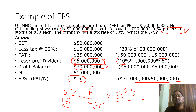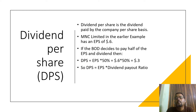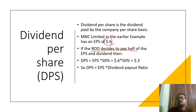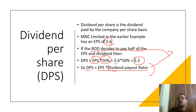Dividend per share is how much dividend the company is paying on a per-share basis. In the previous example the EPS of the firm is $0.6. The board of directors may decide to pay 50 percent of the EPS as dividend, which is $0.3. So DPS equals EPS multiplied by dividend payout ratio. In this case the payout ratio is 50 percent. A higher dividend payout ratio will mean a higher DPS.